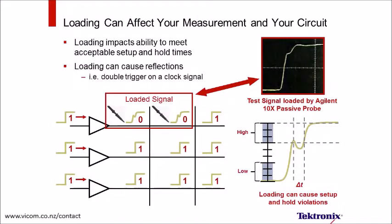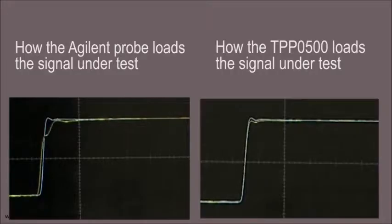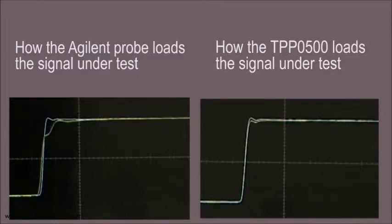Here's an example where the probe's loading effect may not only cause measurement inaccuracy but can also affect circuit operation. The probe's large input capacitance has caused the signal to fail to meet critical setup and hold-time requirements. You can also see how a degraded front edge or ringing can cause reflections which will compromise signal fidelity. When validating your design, make sure you choose a probe that will do less harm by selecting one with low input capacitance, such as the TPP0500.